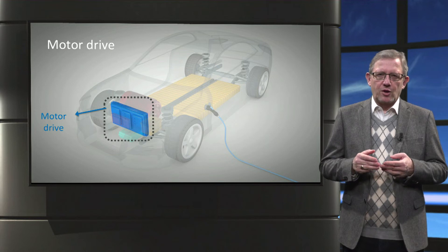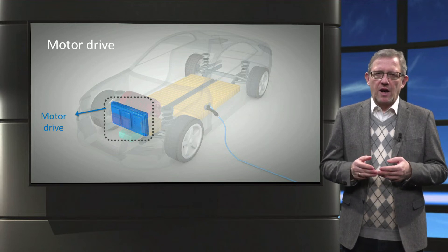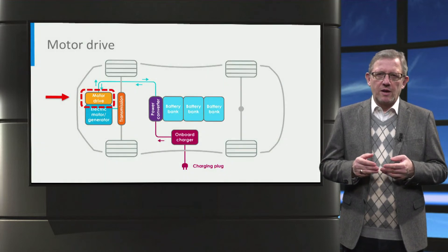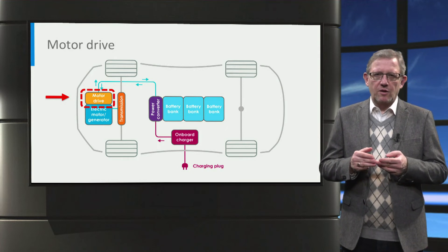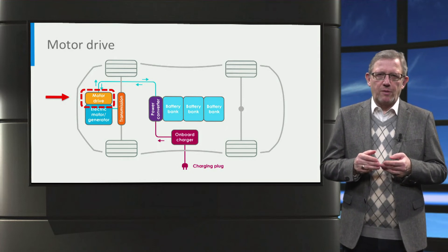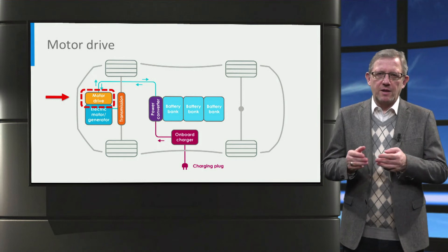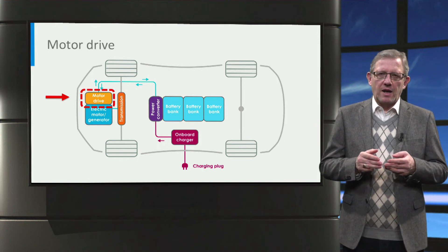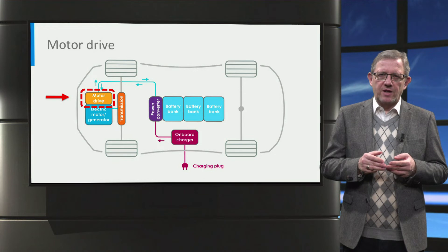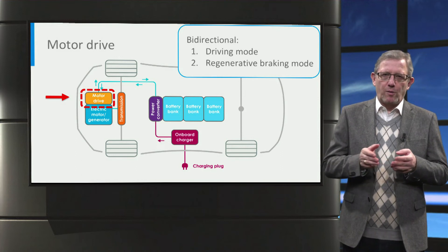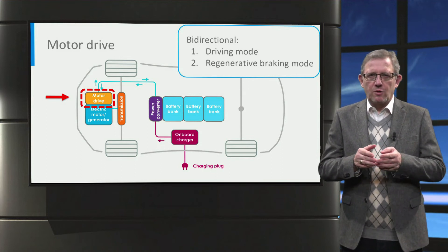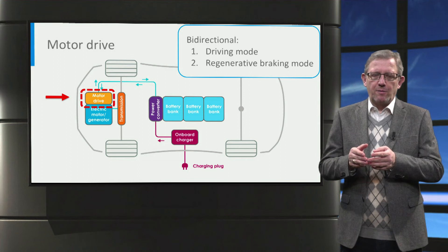The next component is the motor drive. The motor drive controls the speed, torque and rotational direction of the motor. Depending on the motor, the motor drive is a DC-to-AC inverter or a DC-to-DC converter that is used to control the power flow between the battery and the motor. Unlike the power converters seen earlier, the motor drive is a bidirectional converter capable of delivering power to the motor for propulsion, but also removing power from the motor for regenerative braking.